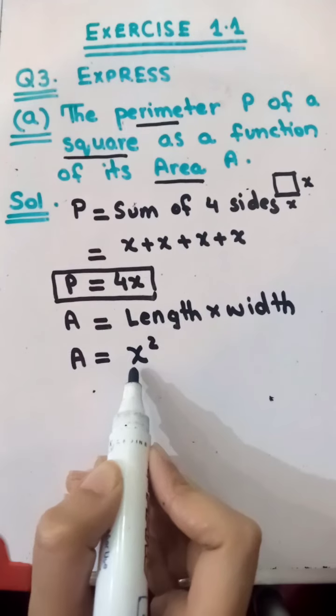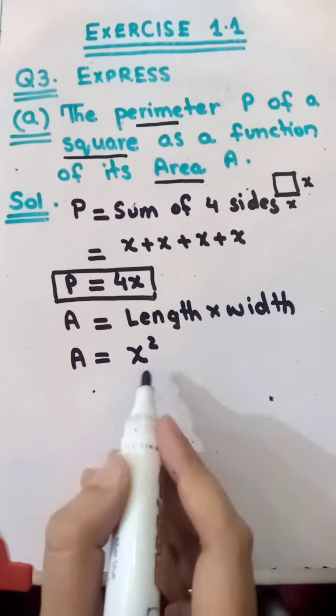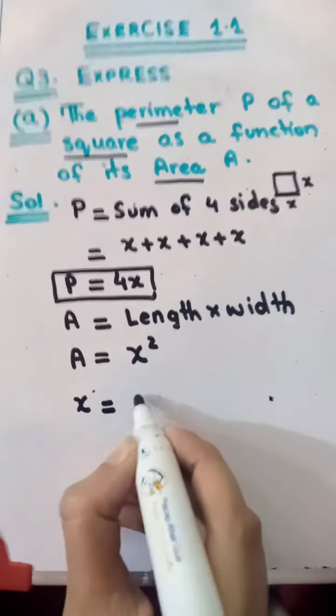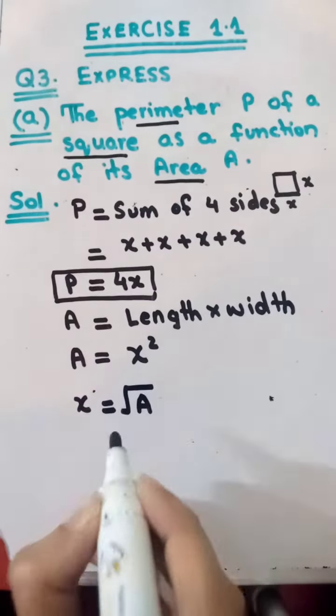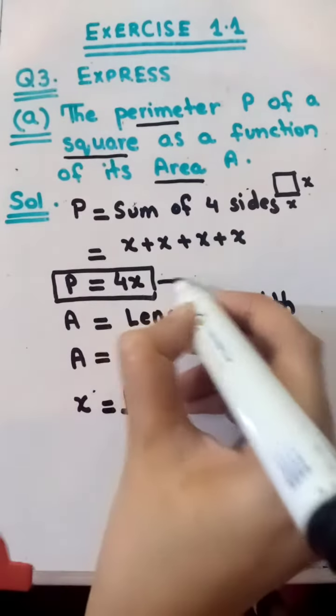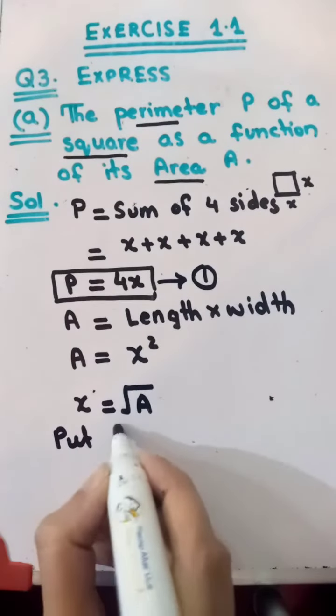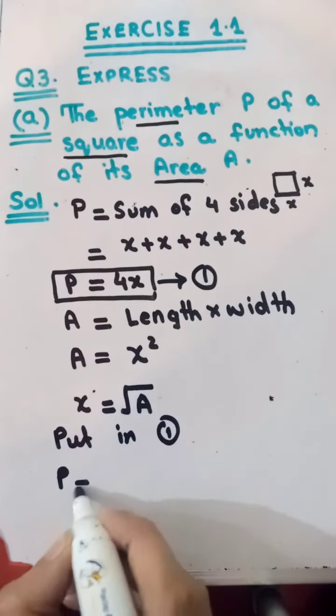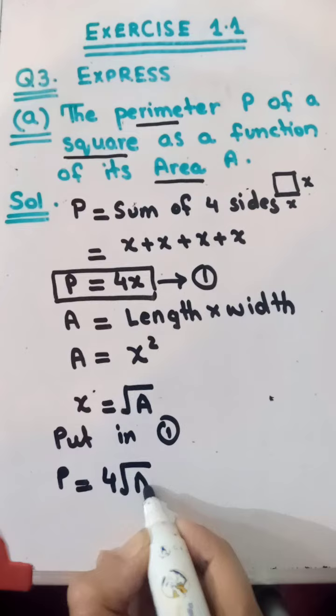Now here we have to calculate the value of x from the area, and its value is x equals square root A. Now put this value of x in this equation. P equals 4 square root A.